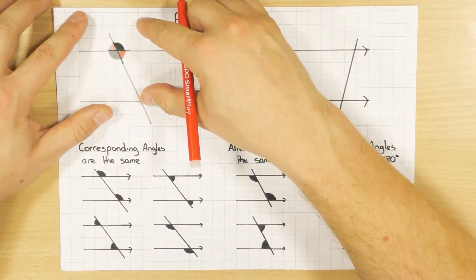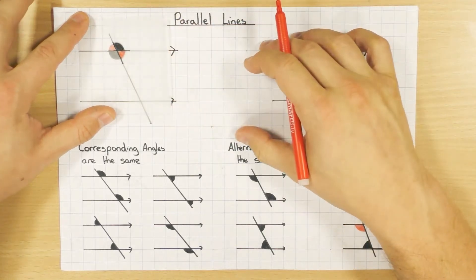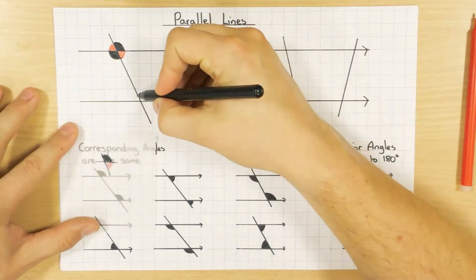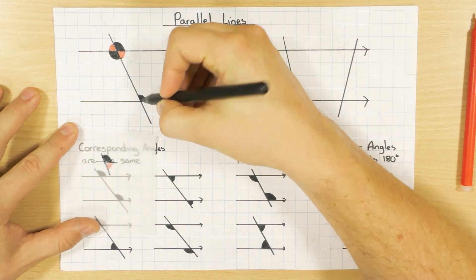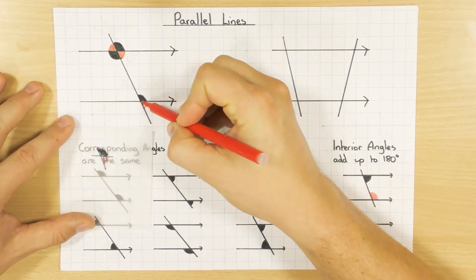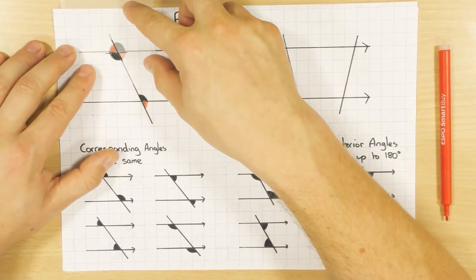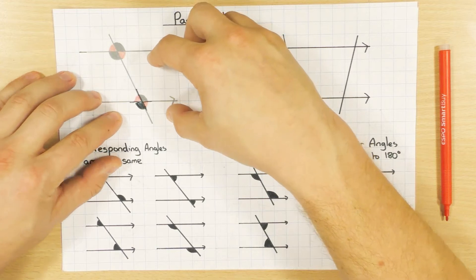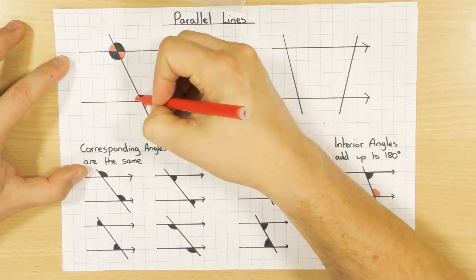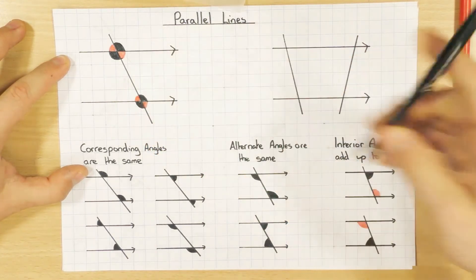What's cool about this is — my black one is the obtuse and the red one is the acute. If I slide that down, you'll notice the obtuse angle is the same. And if I put it over, the acute angle in red is also the same. So that's the first thing to recognise when dealing with parallel lines: the acute angles and the obtuse angles are the same.